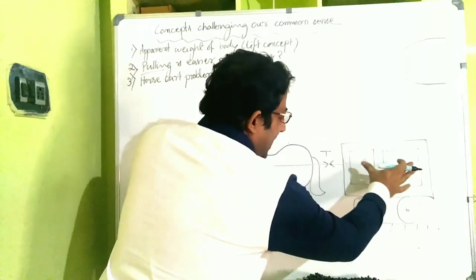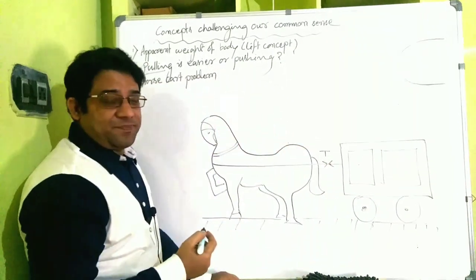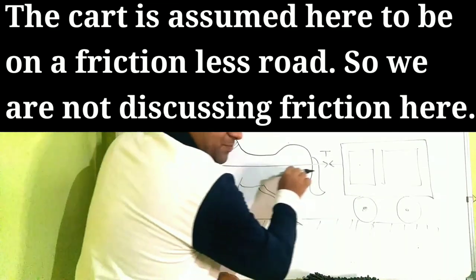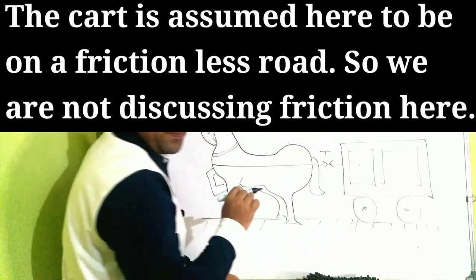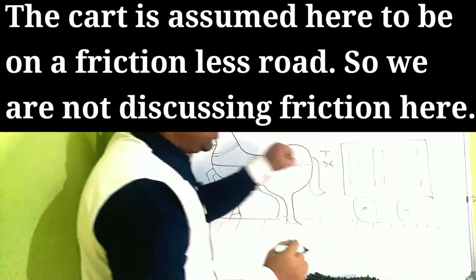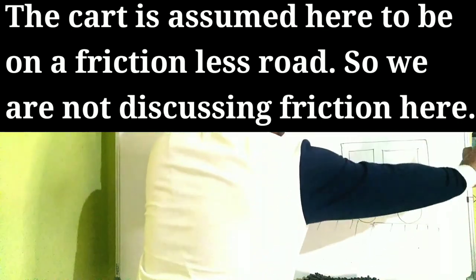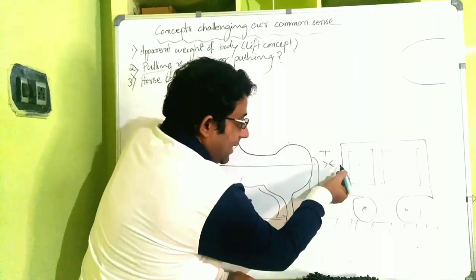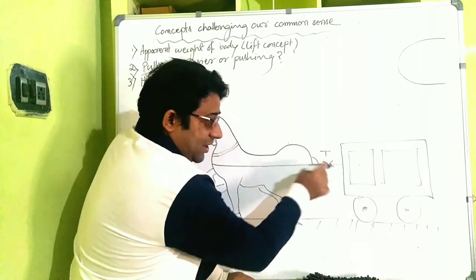See, the cart is experiencing one force only. The action is—if you are calling this action—the horse is pulled back, right? Not the cart. If the cart only is pulled from this side and the cart only is pushed from this side, then it should be at rest, but that is not happening.